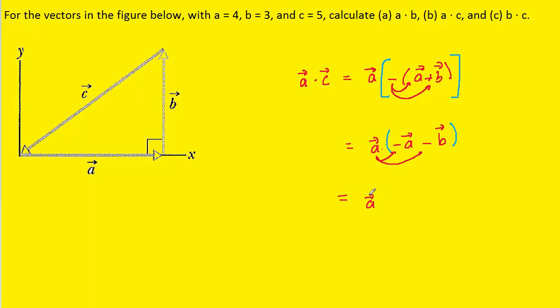And so what we would have is the dot product of vector A and negative vector A, and then we would also have minus the dot product of vector A and vector B.